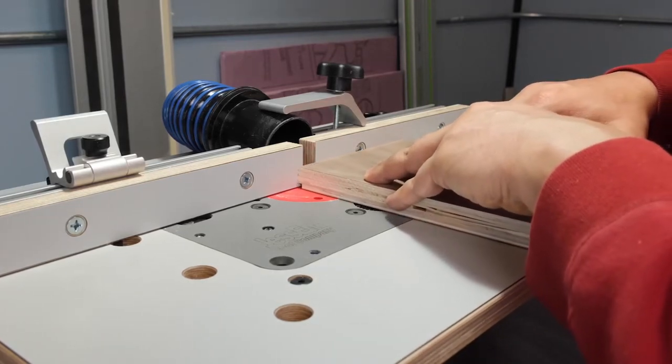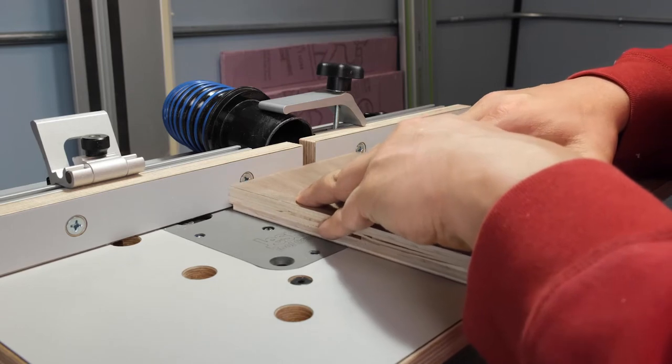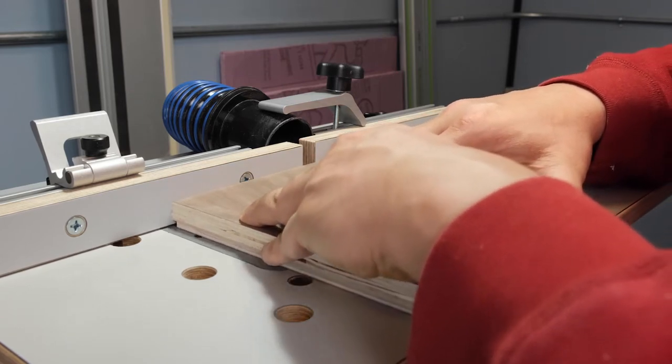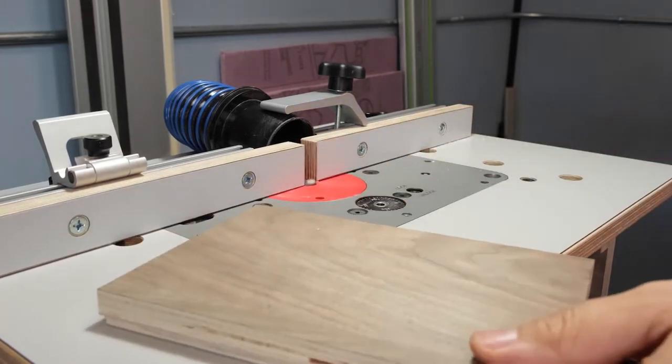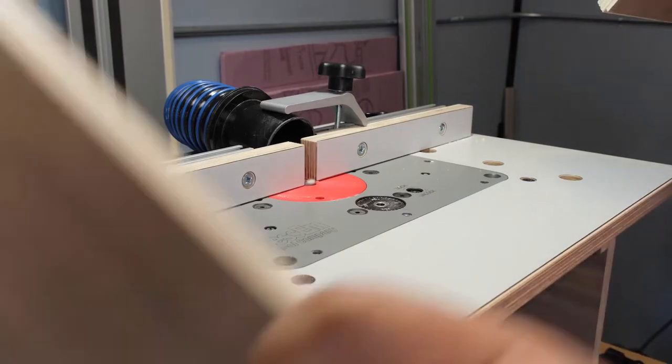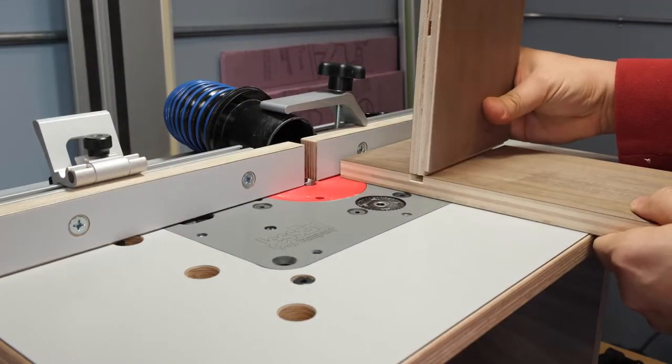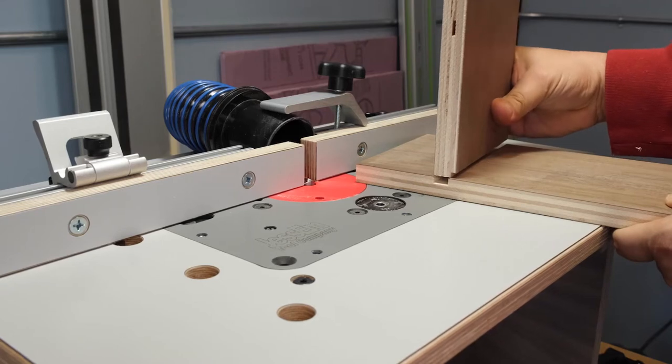Now onto the tongue. Set the fence and bit to create a shallow rabbet. This is just your starting point. After the initial pass, check to see how close you are to fitting.